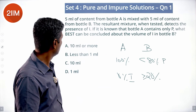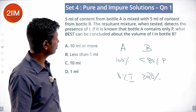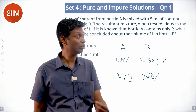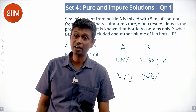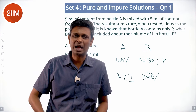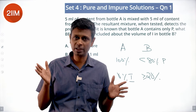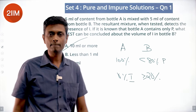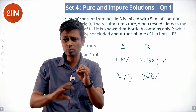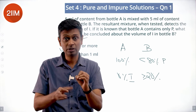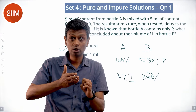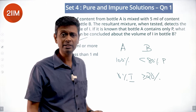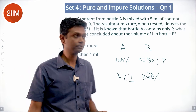Since they're mixing in equal quantities, bottle B should have greater than or equal to 20% impurity. What is the minimum volume of I in bottle B? 20% of 50ml is 10ml, so at least 10ml of impurity should be in bottle B. Bottle A has 0% impurity, you're mixing equal quantities, the average must be 10% or more, so bottle B must have 20% or more impurity — that is 10ml or more.